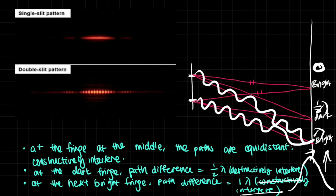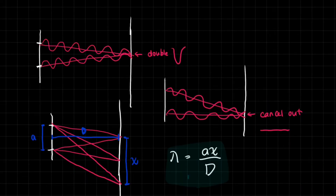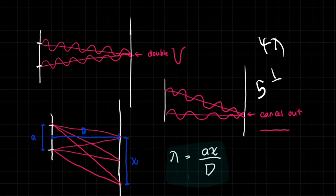When the path difference is whole multiples of lambda — not half lambda — they constructively interfere. If the path difference was 4 lambda, they would constructively interfere and become brighter. If it was 5.5 lambda, it would destructively interfere and be dark. You just need to look at whether it's a whole number multiple or a half multiple.